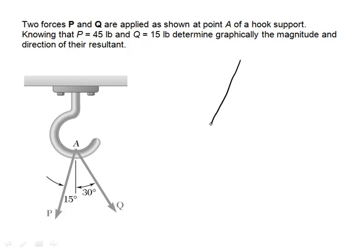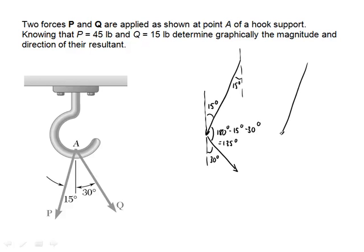Going back to the diagram, there is 15 degrees, and by alternate interior angles this is also 15 degrees. This is 30 degrees, and therefore this angle must be 180 degrees minus 15 degrees minus 30 degrees, which is 135 degrees. So as I look at that resultant, I know this side is 45 pounds, this side is 15 pounds, and the included angle is 135 degrees.